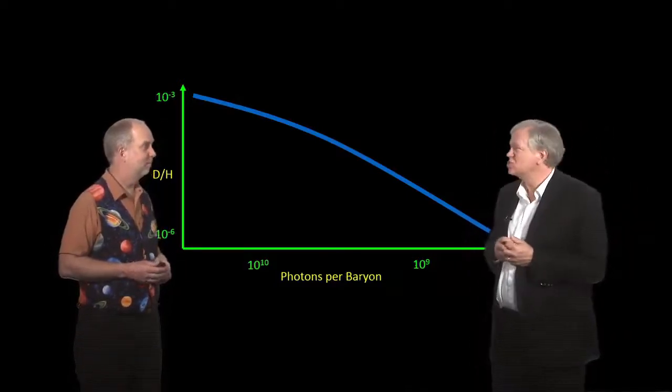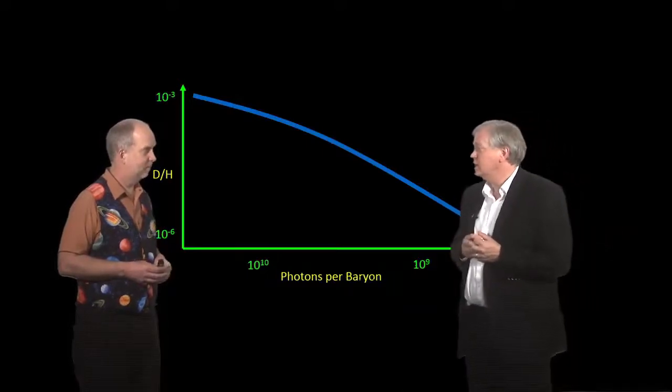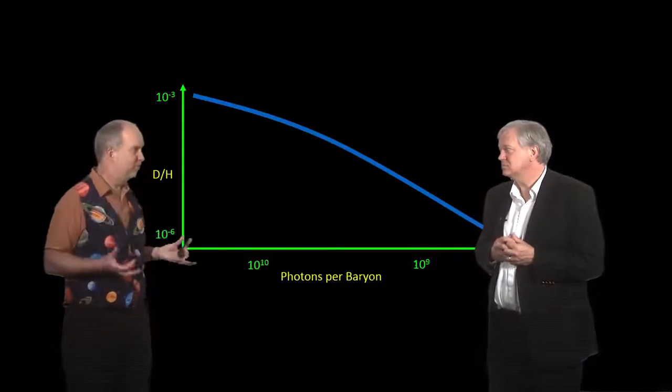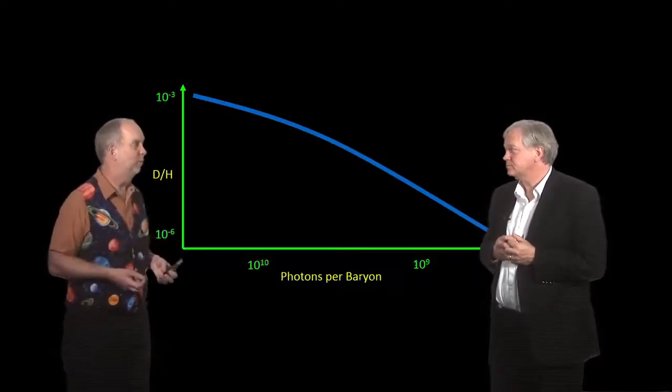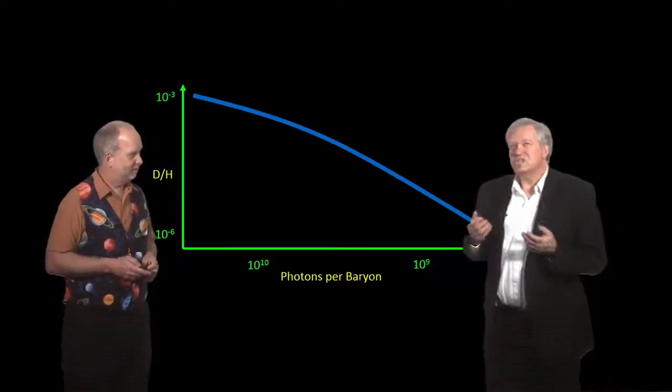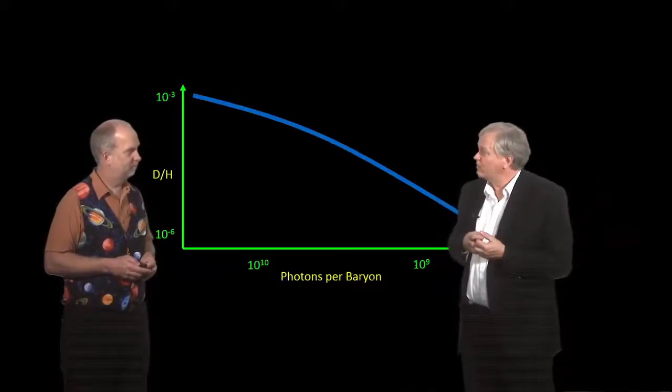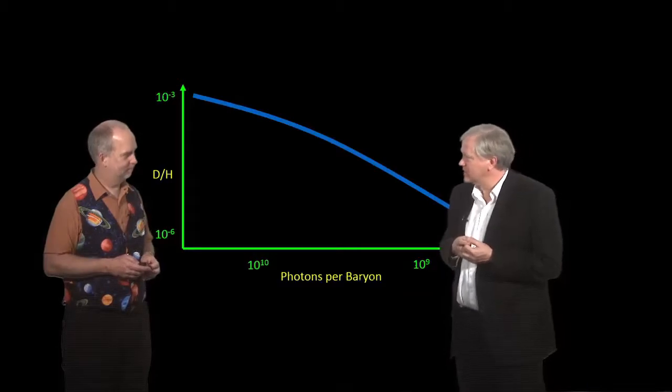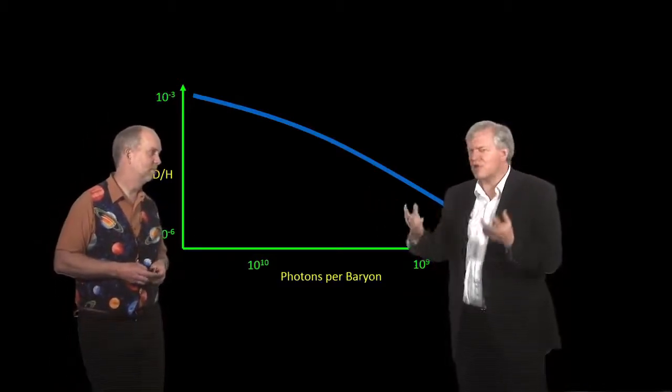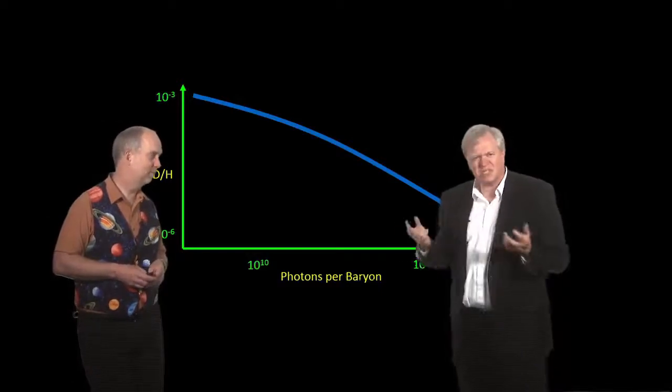Yeah, in fact, deuterium tends not to be created in stars, it tends to get destroyed because it's such an unstable thing. You put it in anywhere near nuclear fusion, it's going to get blown to pieces and turned into something else. And so since we know that the sun is about 1.4 percent metals, that is stuff not created in the Big Bang, we know there's been a lot of processing of that material. It's all mixed up.